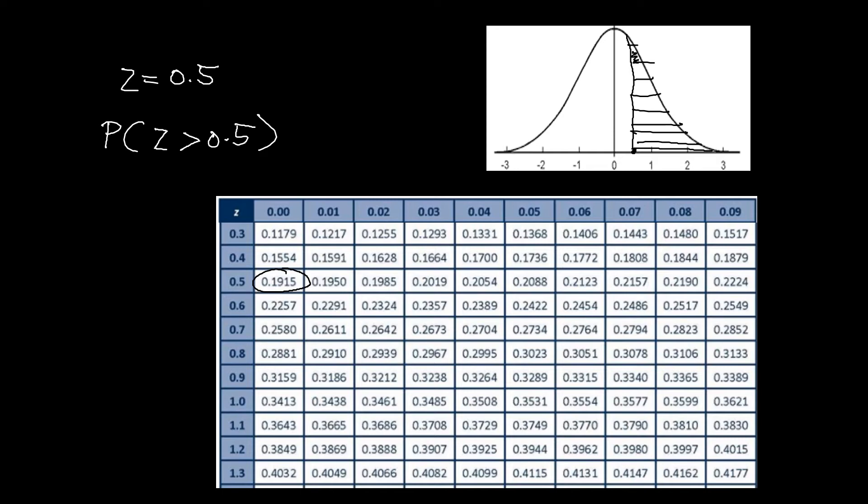You will know what to do right away for that one. We've got that area which is on the tail part and we are supposed to subtract the area equivalent to 0.5, which is 0.1915, to your 0.5. So we have there 0.5 minus 0.1915.